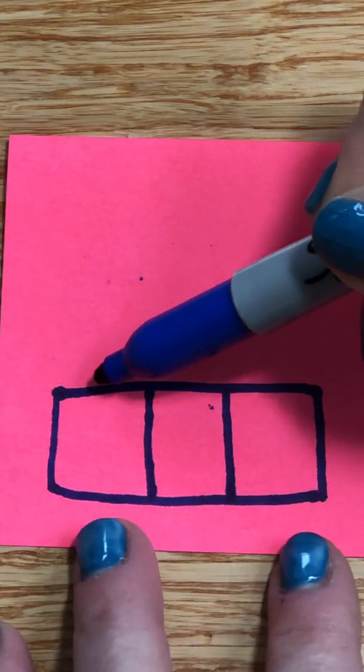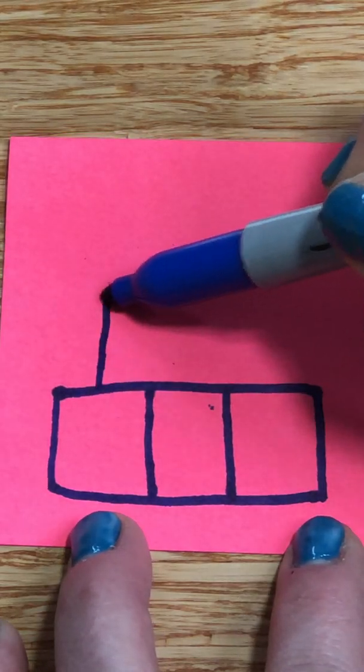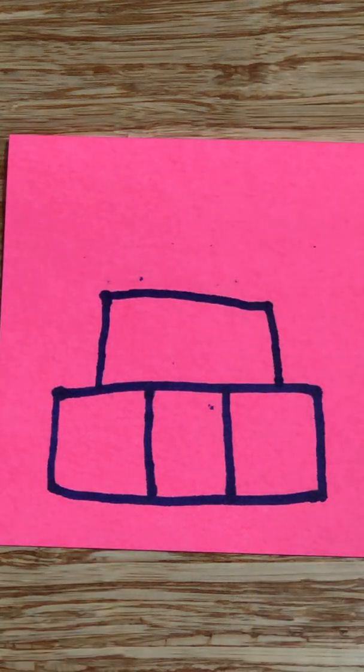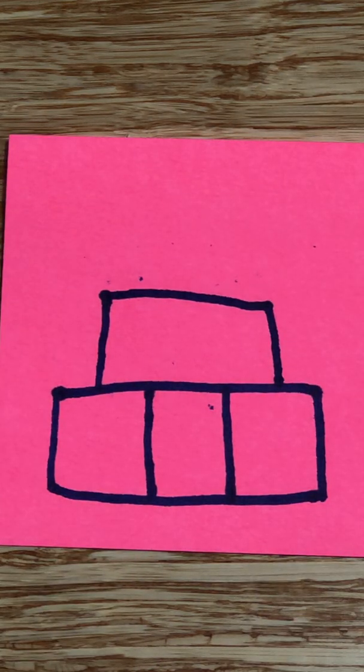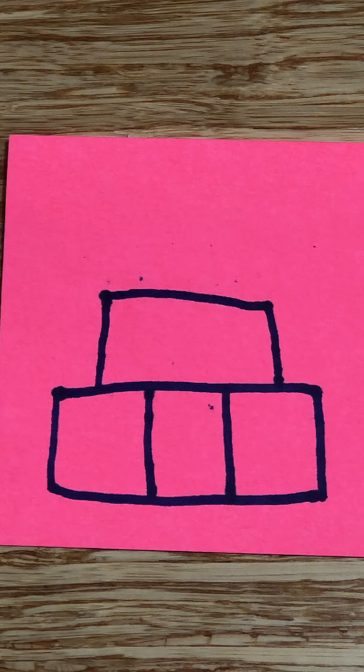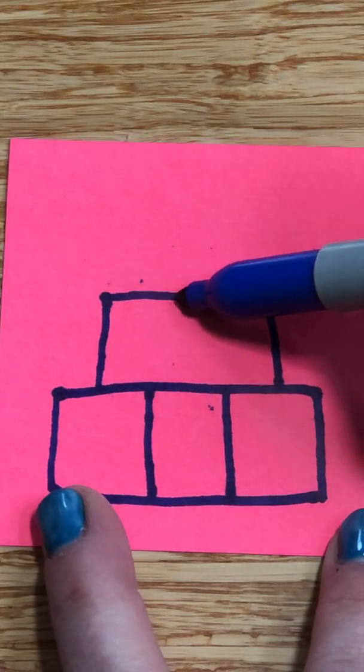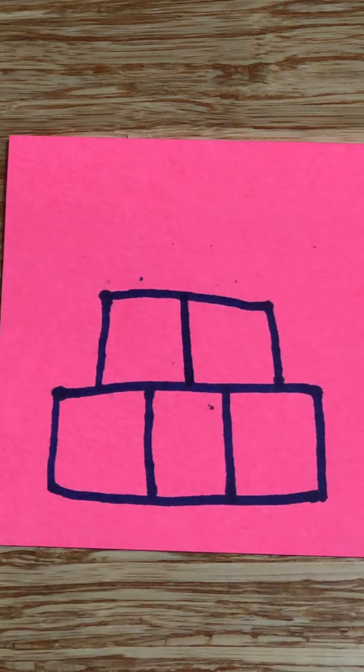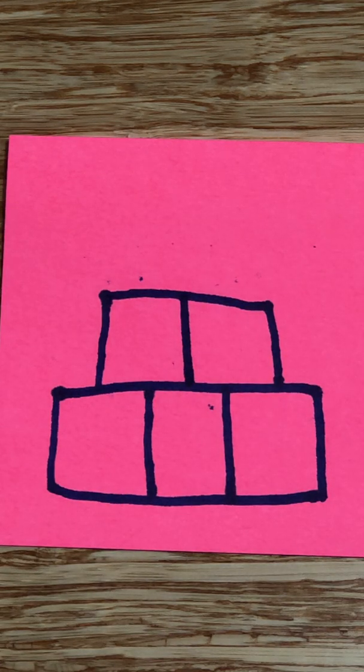Next, draw another rectangle sitting on top of that with another straight line down the center. And lastly, you need one on the top.